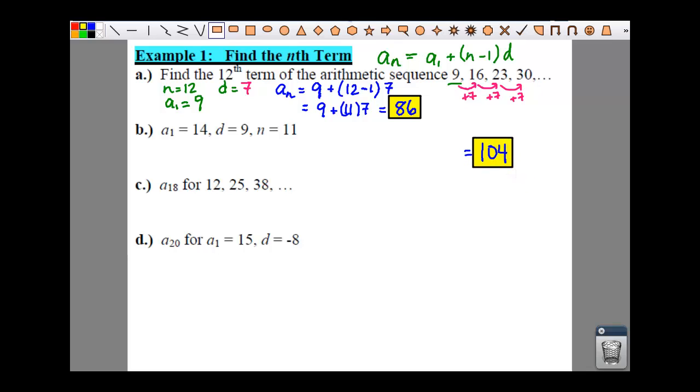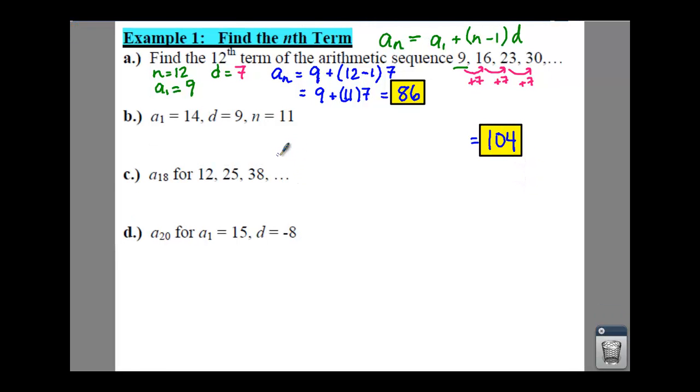Alright, so hopefully you paused the video. If you did, here is your answer of 104. So you would just plug these in. You would say our eleventh term, because that's our n, is equal to 14 plus 11 minus 1 times your d, which is 9. So you get 90 plus 14 gives you 104.